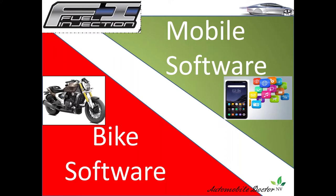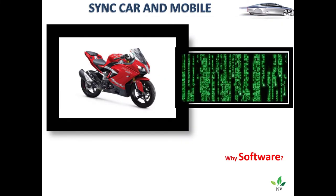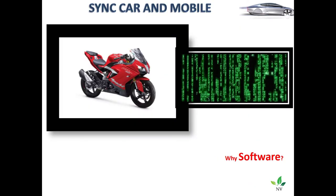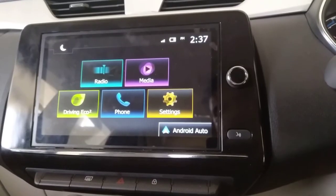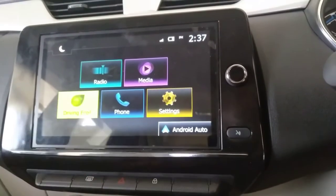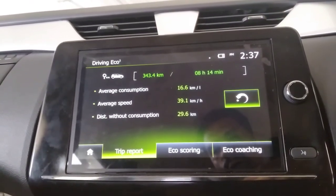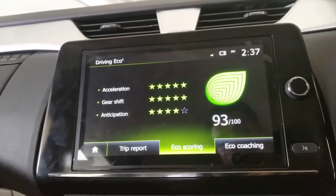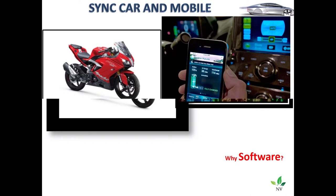Hello friends, today let us understand about mobile software and bike software and what is the difference between them. Many know what mobile software is, so let us understand the other one. Mobile software, bike software — first of all we know bikes, but not many know it has software. Recent automobiles, bikes, cars, everywhere there are a lot of Android autos and many things connected to cars, including mobile phones, fuel consumption features and more.